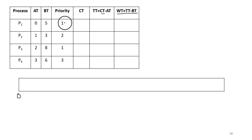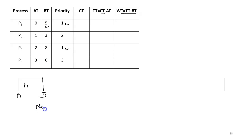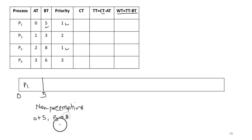At time zero, process P1 is having the highest priority. We consider that lower number means higher priority, so P1 is having priority one. Along with P1, P3 is also having a high priority, but at time zero only P1 has arrived, so P1 will hold the CPU for five units. In this problem we are following non-preemptive type of priority based scheduling.